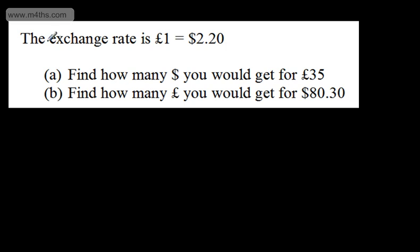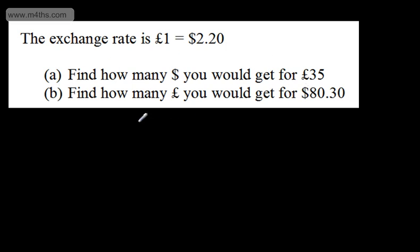So let's have a go at this question. It says the exchange rate is £1 is equal to $2.20. In part A, we're asked to find how many dollars we would get for £35, and in part B, how many pounds we would get for $80.30.